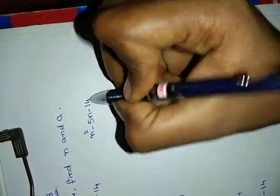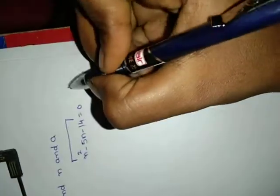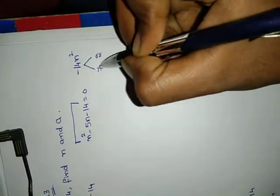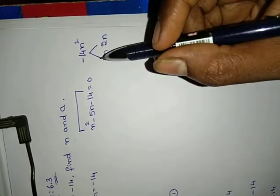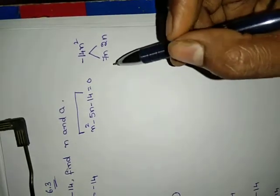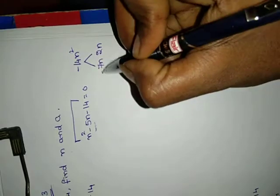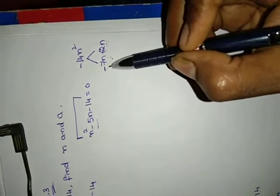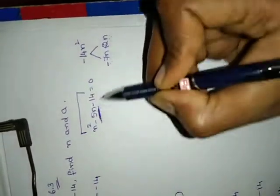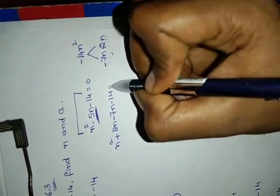Now take factors for N squared minus 5N minus 14 equals to 0. Multiply first and last terms: minus 14N squared. Factors of 14: 7 and 2. Since the middle term symbol is minus, for the bigger number we take minus and for smaller we take plus: minus 7N and plus 2N. Check: minus 7 into plus 2 gives minus 14N squared, and minus 7N plus 2N gives minus 5N. So: N squared plus 2N minus 7N minus 14 equals to 0.